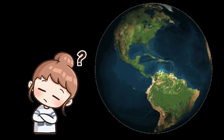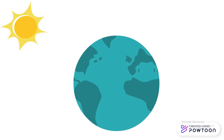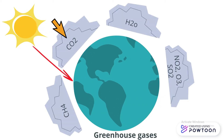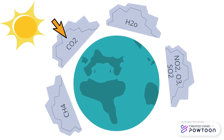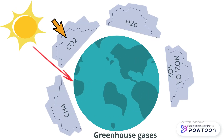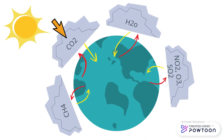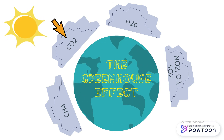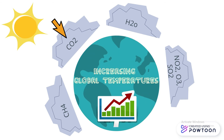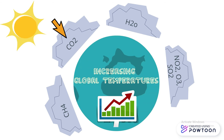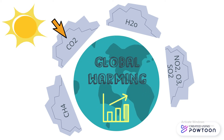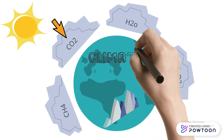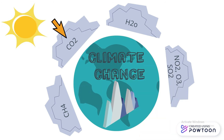Now why is this a problem? Carbon dioxide is among the greenhouse gases that trap the sun's radiation from the Earth's surface and reflect it back as heat, known as the greenhouse effect. This results in an increase in temperatures around the planet, termed as global warming, and large-scale shifts in weather patterns known as climate change.